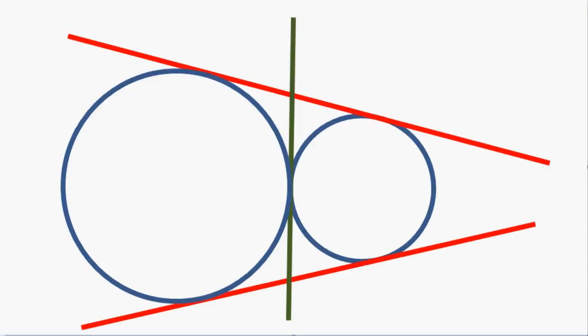When the smaller circle is outside the bigger circle and is tangential to it, we can draw a third common tangent at the point of common tangency of the two circles. And now we have three common tangents to the two circles.